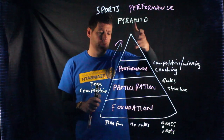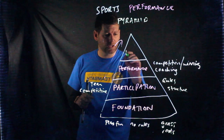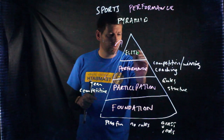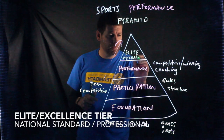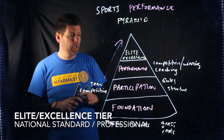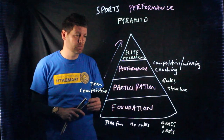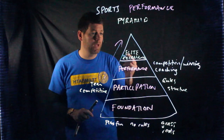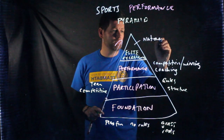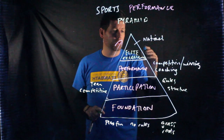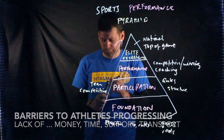At the very top we've got what we call the elite level, or the excellence level. Not many people make it this far up — that's why the pyramid narrows, because people tend to fall off for different reasons. At the top level this is national level. This is like you've made it in sport, you're at the top of your game — really, really successful.